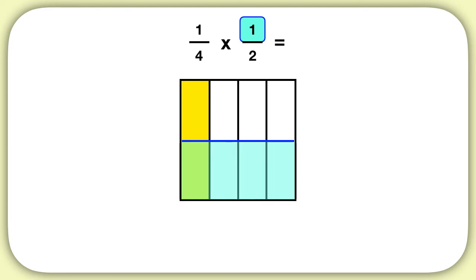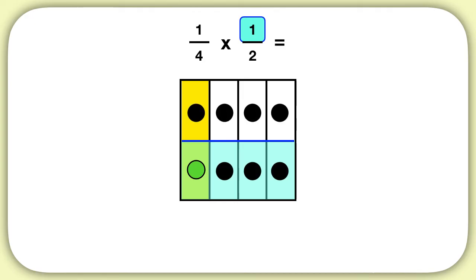Then we see one piece has been shaded twice, and it's out of a total of eight. So one-fourth times one-half is one out of eight.